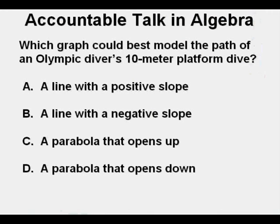Here's a recent problem in my class that was the cause of a lot of Accountable Talk in algebra around our school: Which graph could best model the path of an Olympic diver's 10-meter platform dive? A. A line with a positive slope. B. A line with a negative slope. C. A parabola that opens up. D. A parabola that opens down.